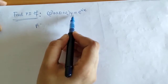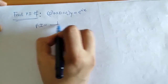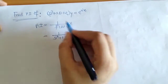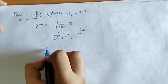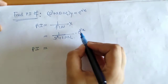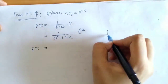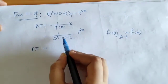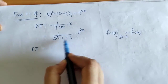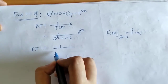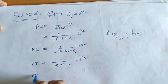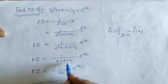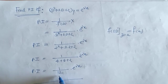Now here we have to find the PI for this differential equation. We apply the formula: f(D) is here and X equals e raised to 2x. We have to put D equals to a. We can check that for D equals to 2, this equation does not get 0. So we put D equals to 2 and get a finite denominator — this is the required PI.